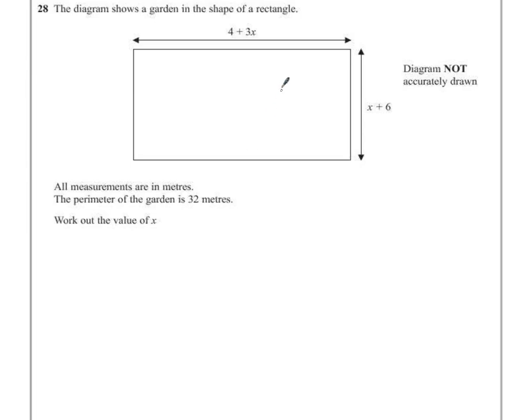Perimeter is the distance around the outside, so it's adding all of these lengths together. Because we're told it's a rectangle, we know that the left hand side must also be x plus 6 and the bottom must also be 4 plus 3x, the same as the opposite sides.